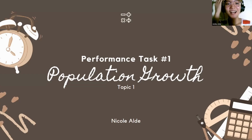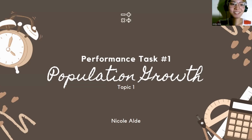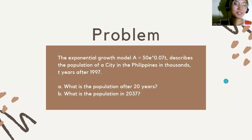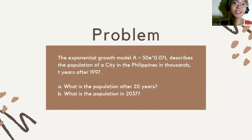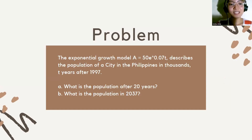Good day, I am Nicole Alde, and this is my performance task number one about population growth. The problem here involves the exponential growth model A equals 50 raised to 0.07t, which describes the population of a city in the Philippines in thousands, the years after 1997.